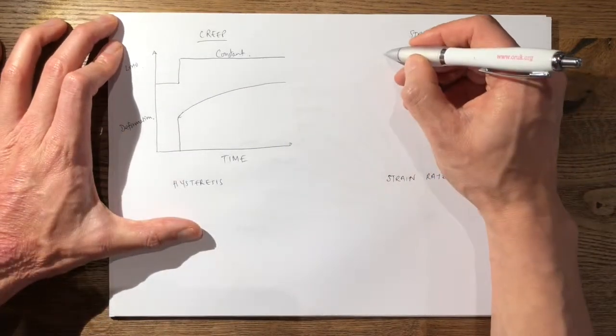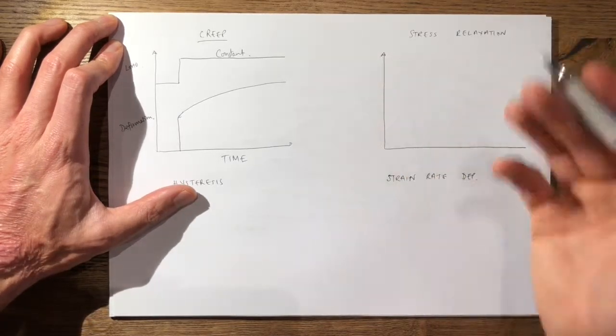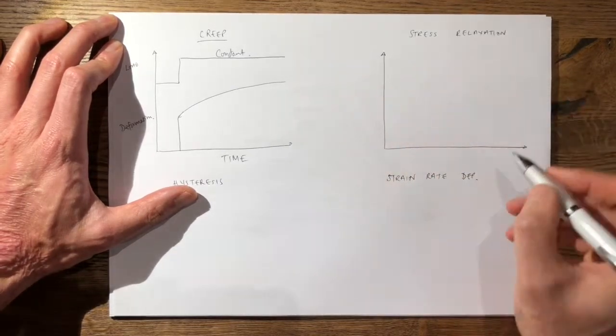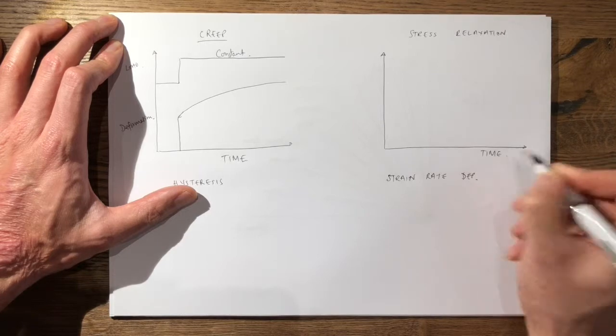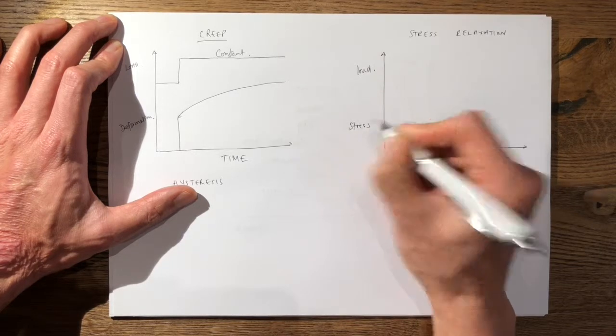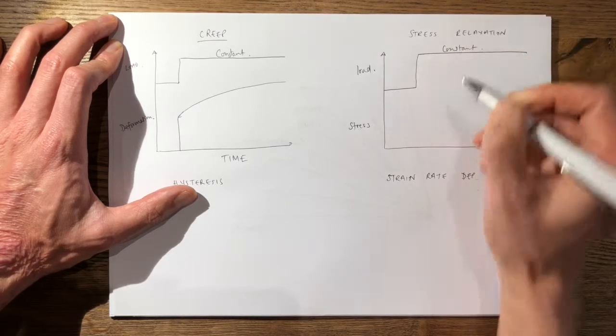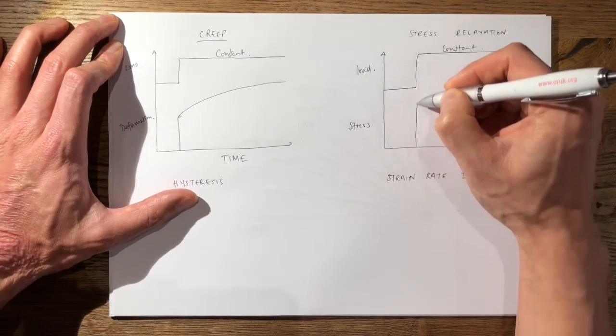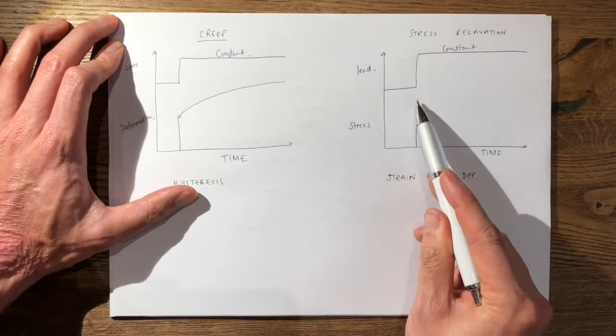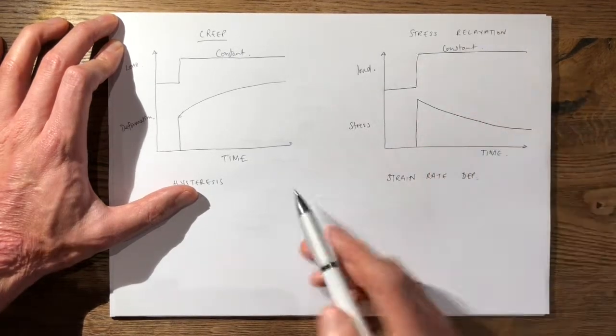Stress relaxation is where the stress of the material gradually reduces under a constant load. So again you have time on the x-axis and on the y-axis again you'll have load, but this time you'll have stress. So again under a constant load, initially once the load is applied you'll have quite a lot of stress in the material. However, over time the material will exhibit less stress under the constant load.